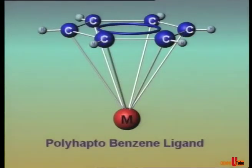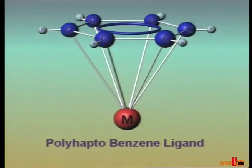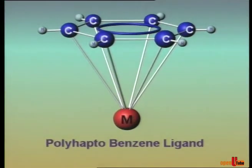A polyhaptic ligand is defined as a ligand that forms more than two attachments to the metal. Benzene ligand is attached through six of its carbon atoms to a single metal atom, so benzene is called a polyhaptic ligand.